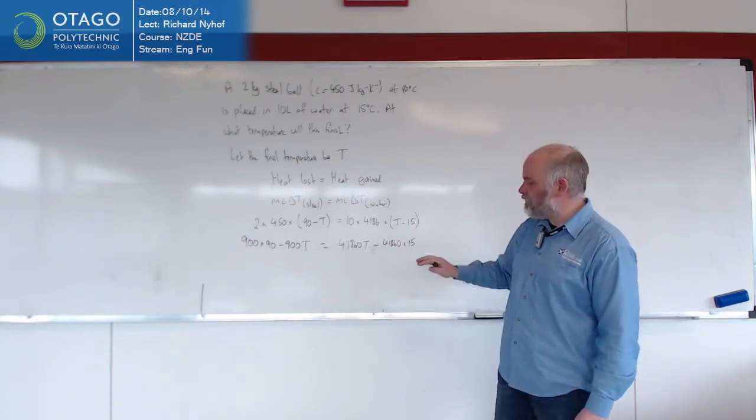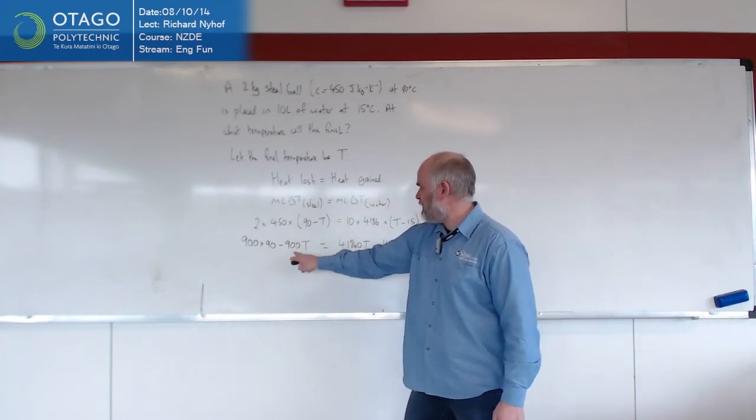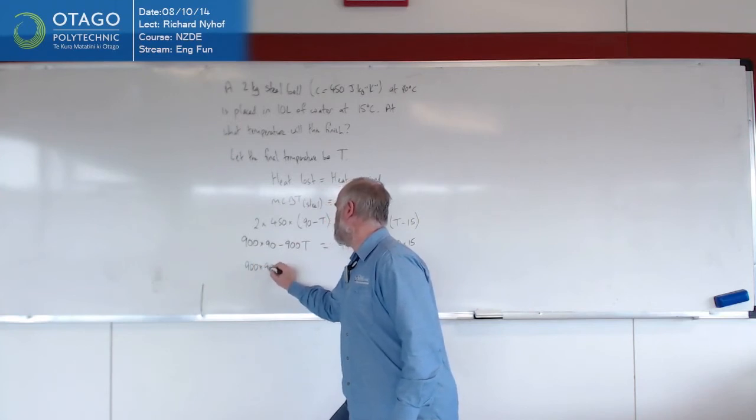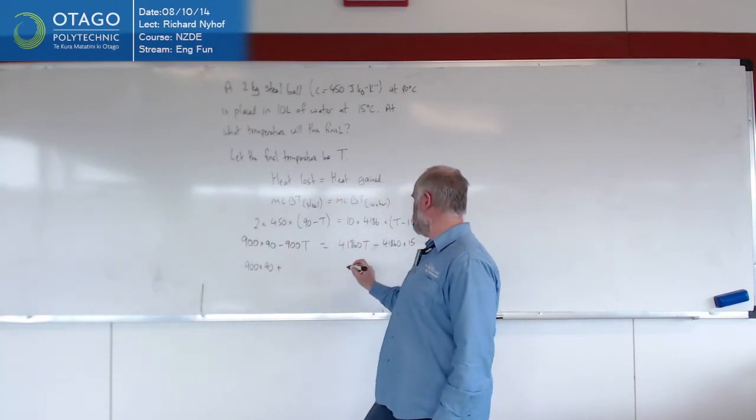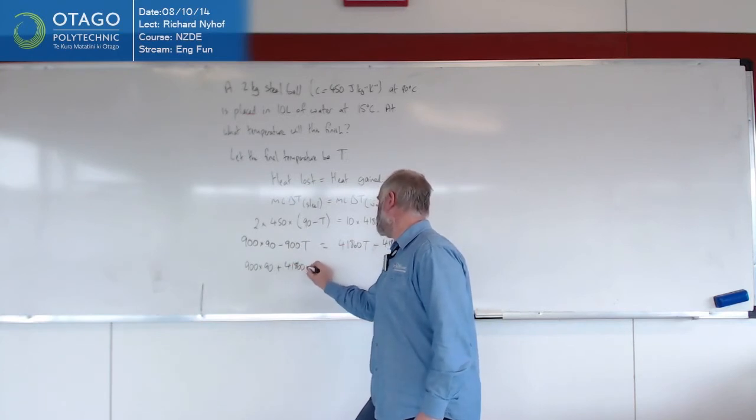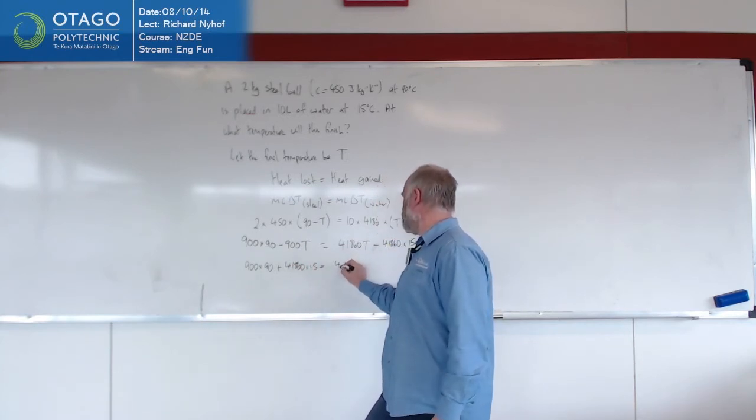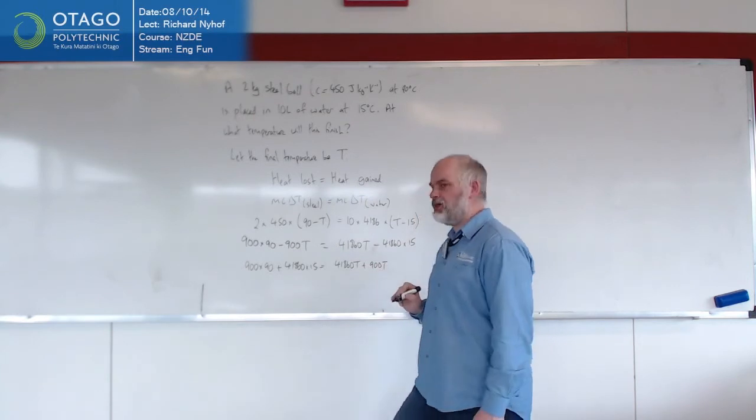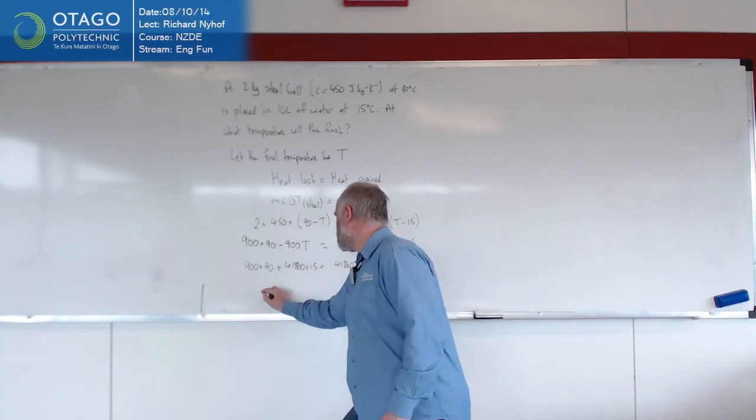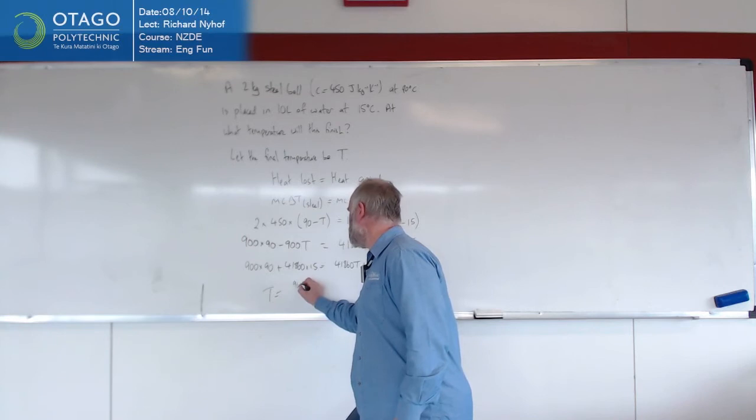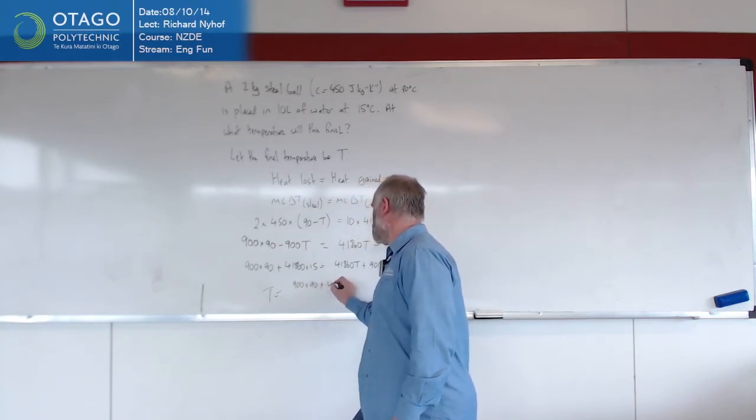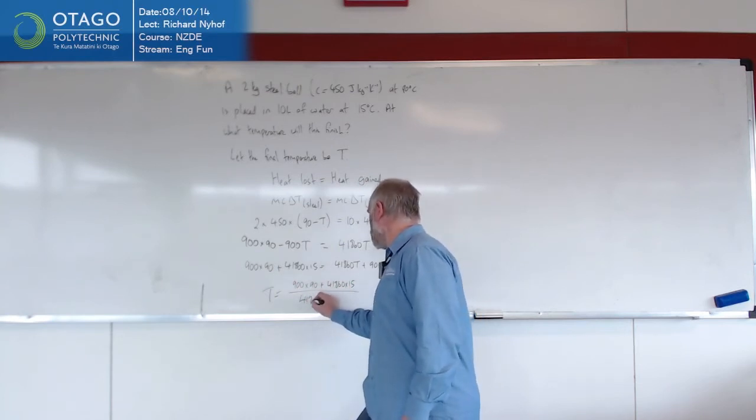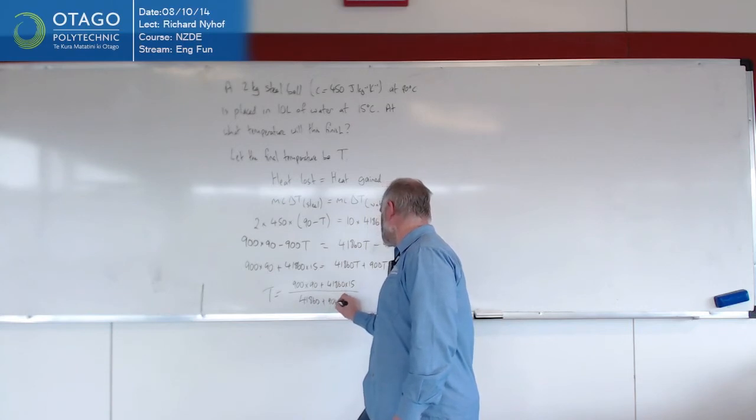And I'm going to move the terms with no T's to this side and the T terms to this side. So I'm going to end up with 900 times 90 plus 41860 times 15 equals 41860T plus 900T. So we factorise and divide. So T equals 900 times 90 plus 41860 times 15, all over 41860 plus 900.